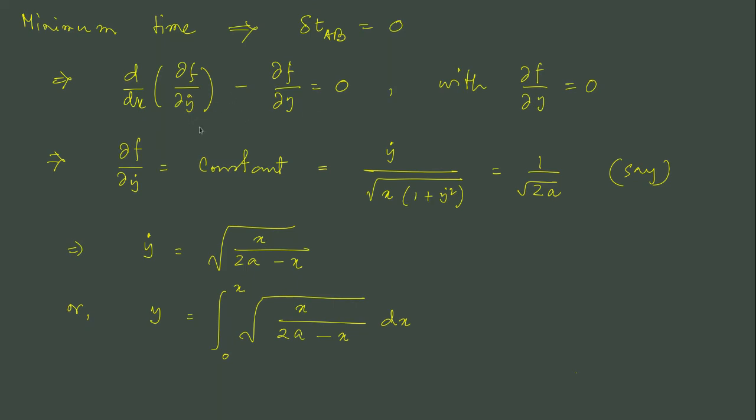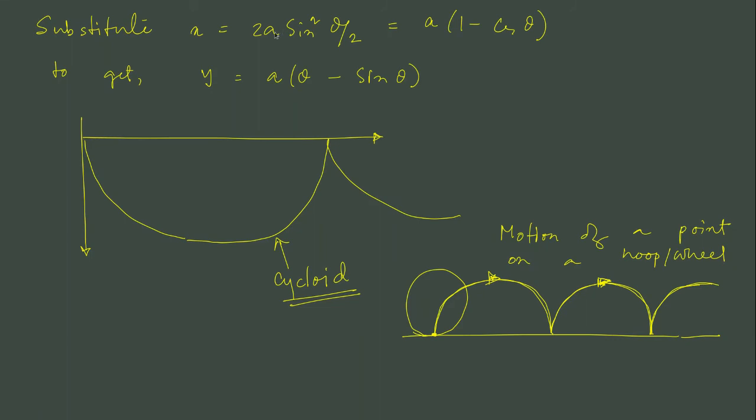Then, the equation of motion is straightforward. We just substitute the values to get something like y dot equal to square root of x divided by 2 a minus x.